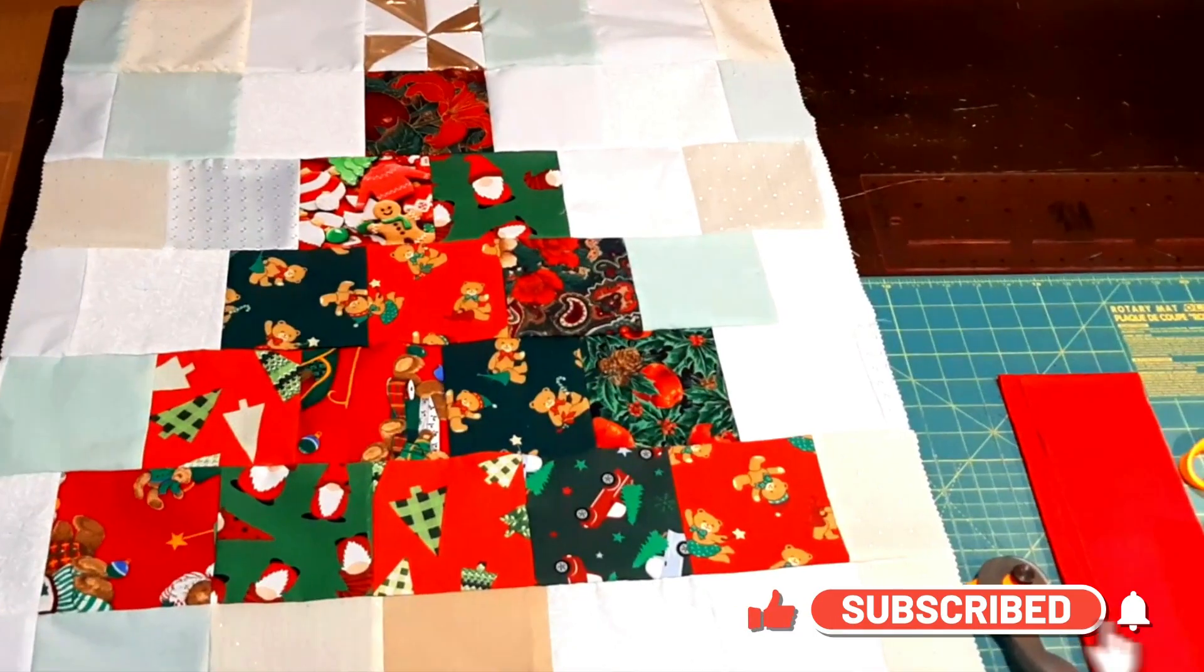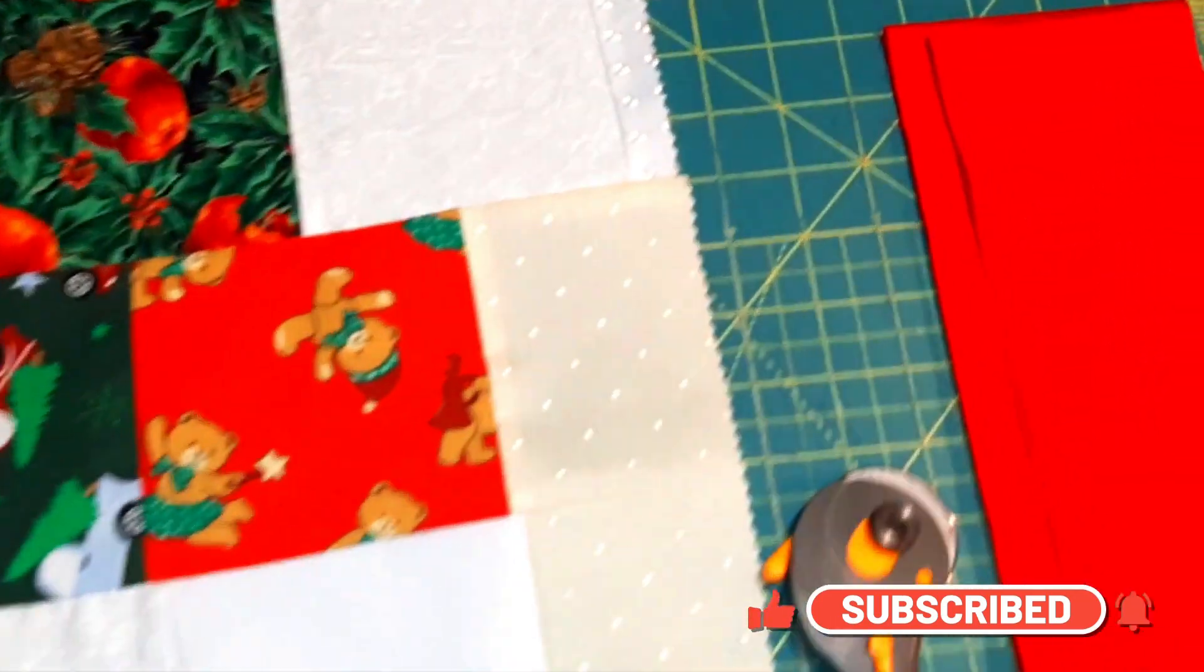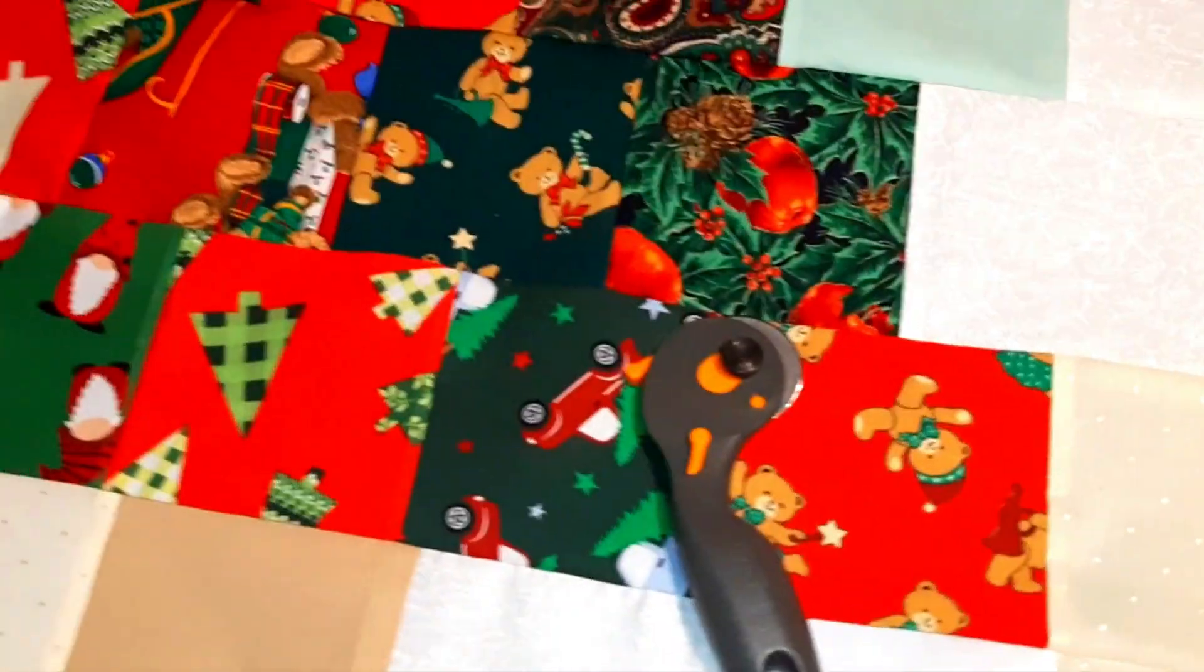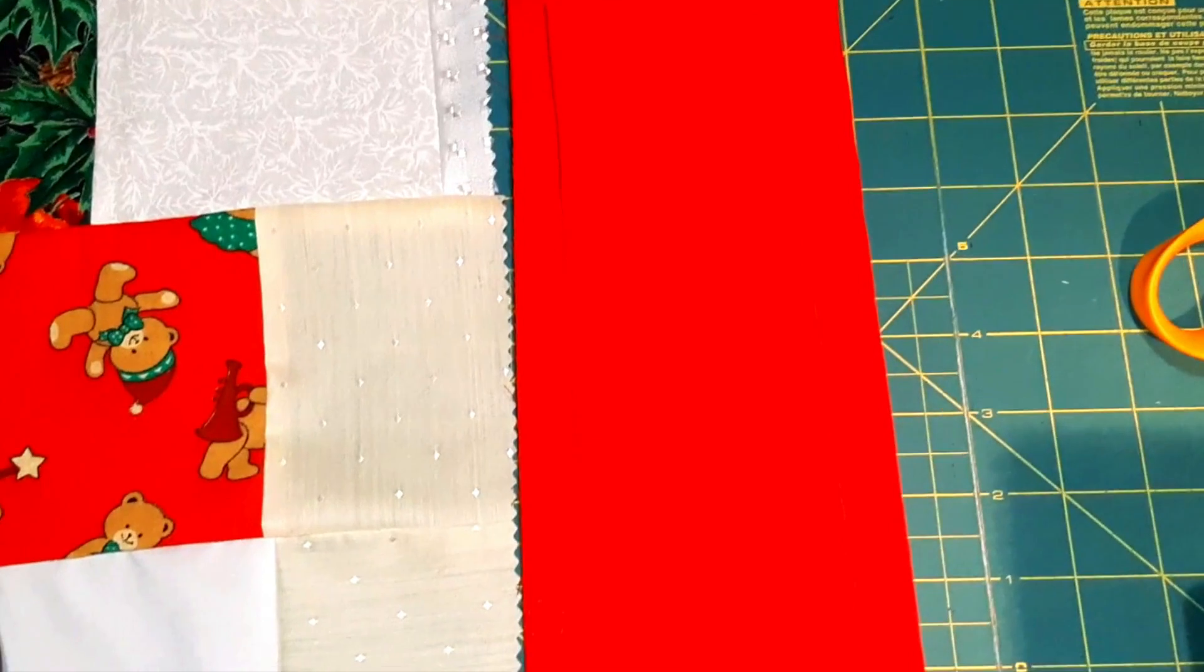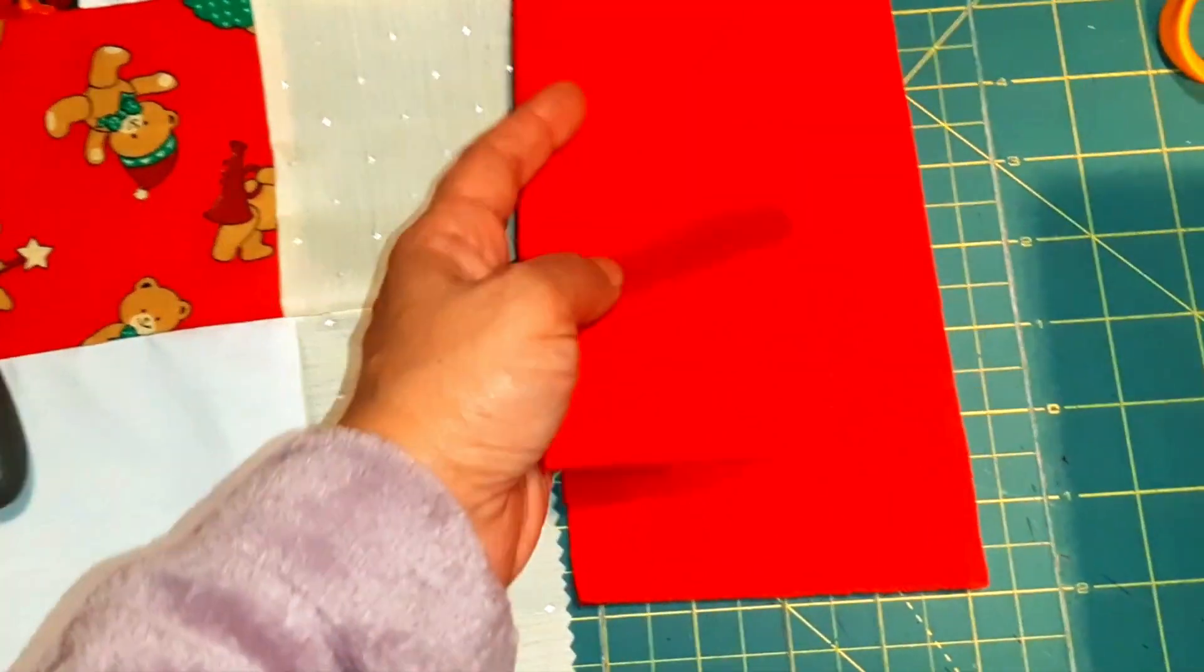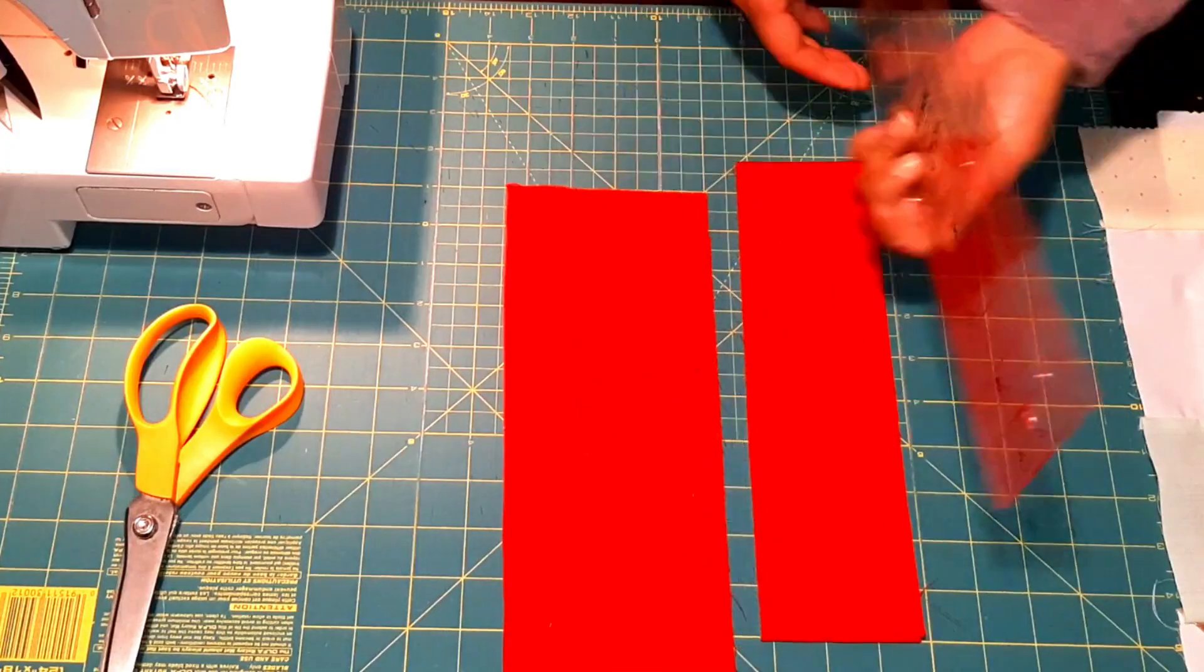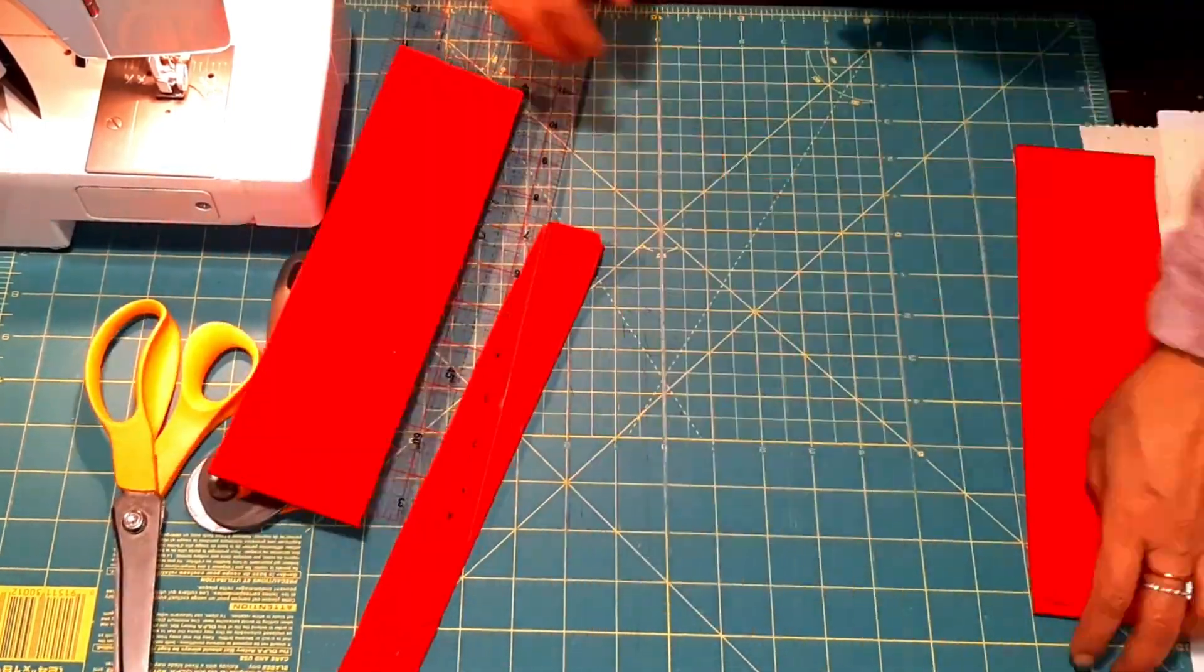I went through my scraps and I found this red fabric. I want to keep the border pretty simple because the tree is so busy. I do like to do fun things with my borders, but I think for this project I'm gonna stick to a plain border. So I have two sets of this and I measured it. It will be a little more than enough, so I'm pretty happy about that.